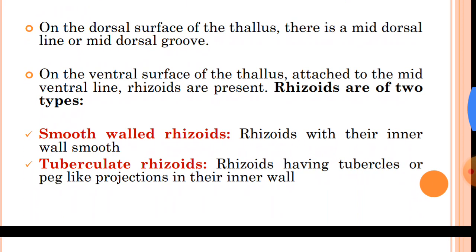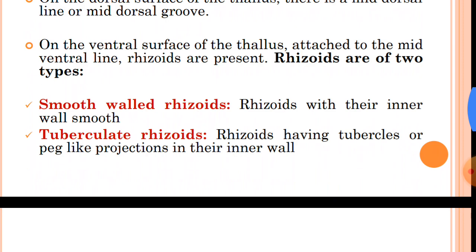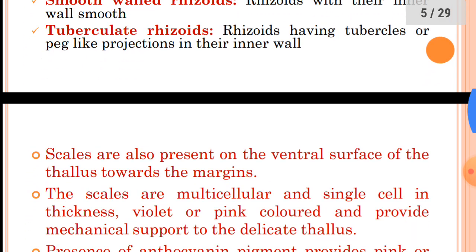Rhizoids are of two types: smooth-walled and tuberculate. The smooth-walled rhizoids have their inner wall smooth, while in tuberculate rhizoids the inner wall has projections. The smooth-walled rhizoids are living at maturity, while the tuberculate rhizoids are dead at maturity.